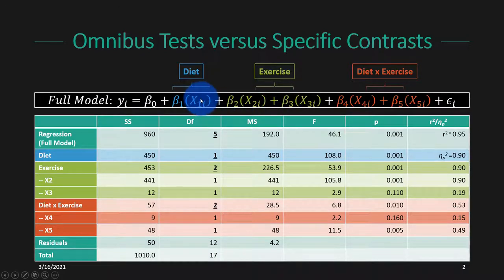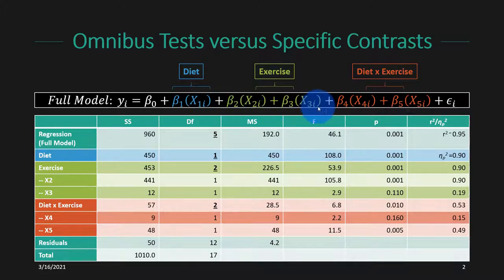We use one degree of freedom to calculate the omnibus effect of diet, two degrees of freedom for the omnibus effect of exercise, and two degrees of freedom for the diet-by-exercise interaction.